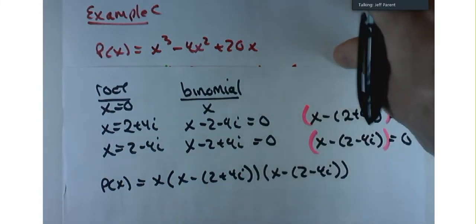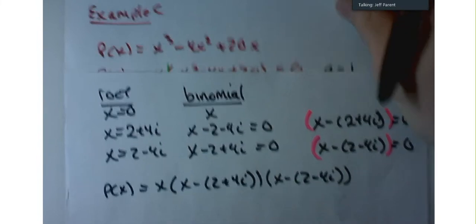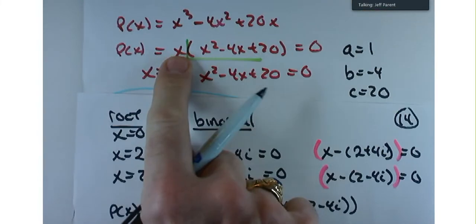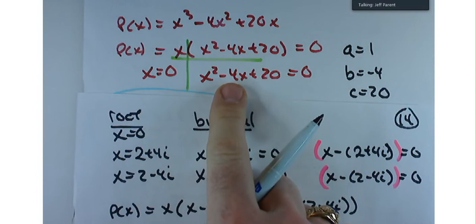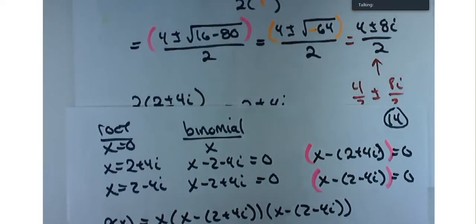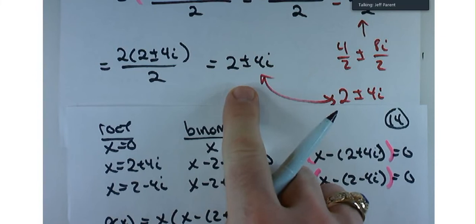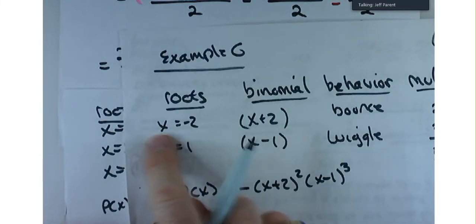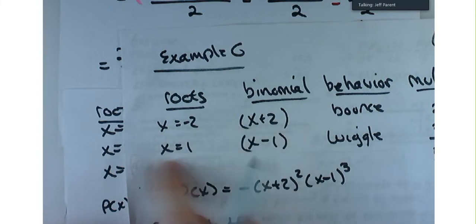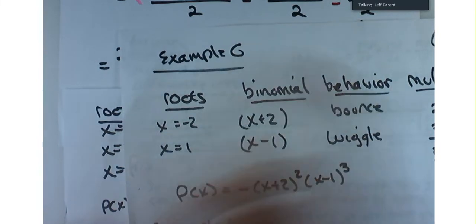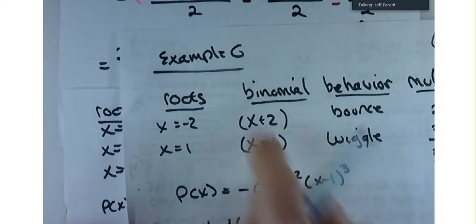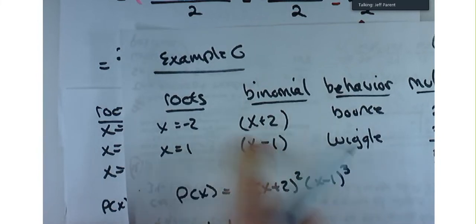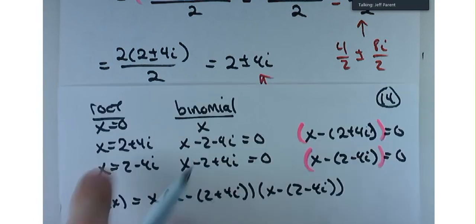There it is as a product of linear factors. The idea is that after factoring, you solved the quadratic part with the quadratic formula, got two complex solutions, and treat them just as you would any root — move the value to the other side to get the binomial factor.